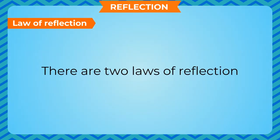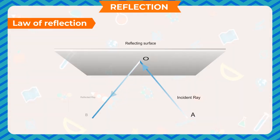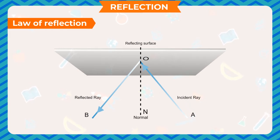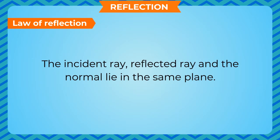Law of Reflection: There are two laws of reflection. The angle of incidence, that is, the angle formed between the incident ray and the normal, is equal to the angle of reflection, that is, the angle formed between the reflected ray and the normal. Thus, angle ION is equal to angle RON. The incident ray, reflected ray, and the normal lie in the same plane.